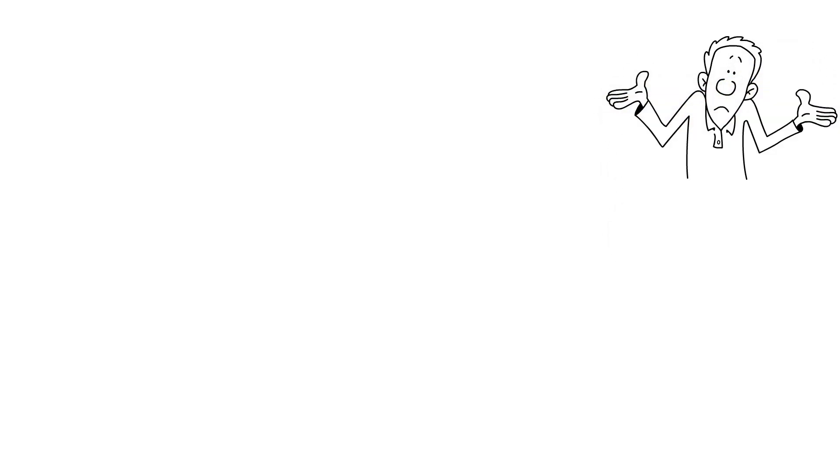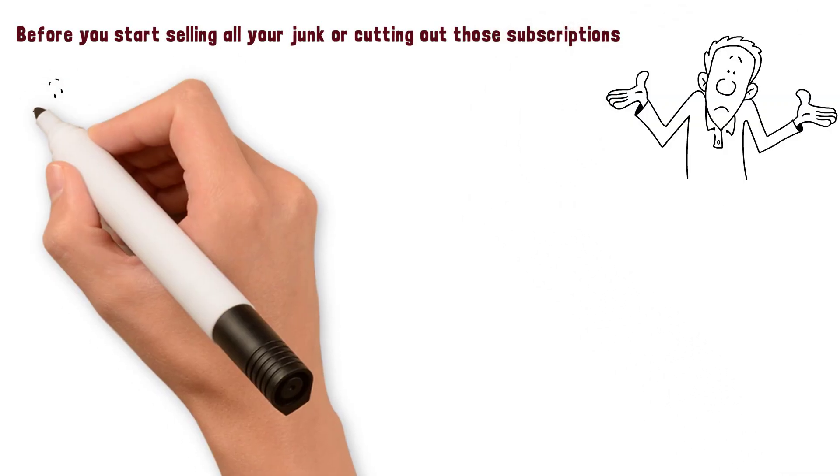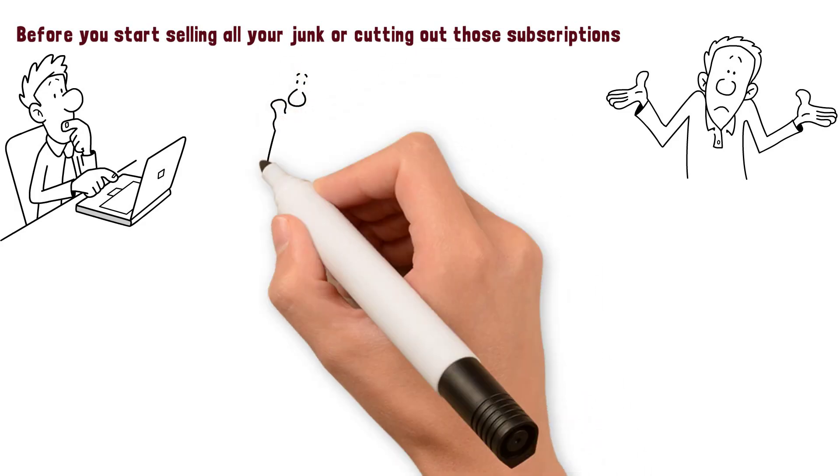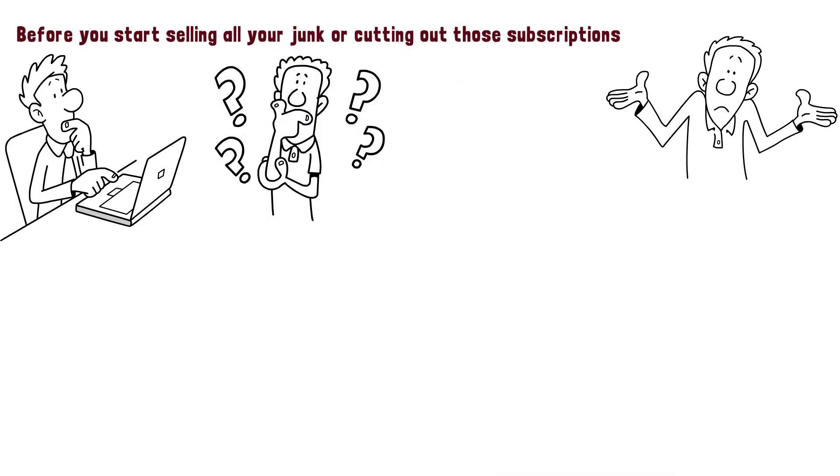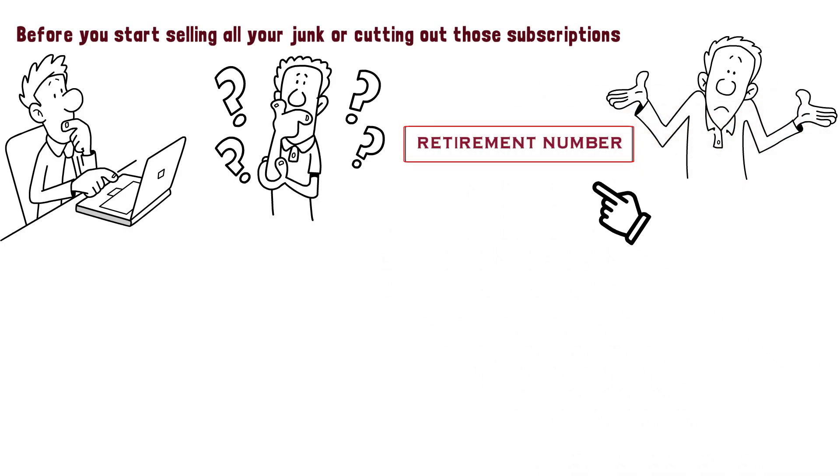Two, set goals. How can you possibly know where you're going and if you're on track if you don't have defined goals? Before you start selling all your junk or cutting out those subscriptions, sit down and truly determine how much you spend every month and year. Decide if this is a realistic number you want to live off of and figure out your retirement number. This is your goal. When you hit this number, it's the moment you're financially independent.